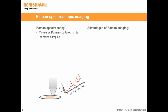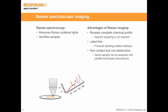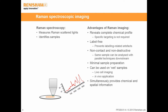There are many advantages of using Raman imaging. The Raman spectra reveal the complete chemical profile; specific targeting is not required. Raman spectroscopy measures the intrinsic energy in the samples, so labelling is not needed and labelling-related artefacts can be prevented. It is non-contact and non-destructive, so the same sample can be analysed with parallel techniques downstream to provide correlative data. There is minimal sample preparation, water has minimal effect on the spectra, and Raman can even be used on live cells and for in vivo applications. Raman imaging is one of the three techniques that can provide chemical and spatial information simultaneously.